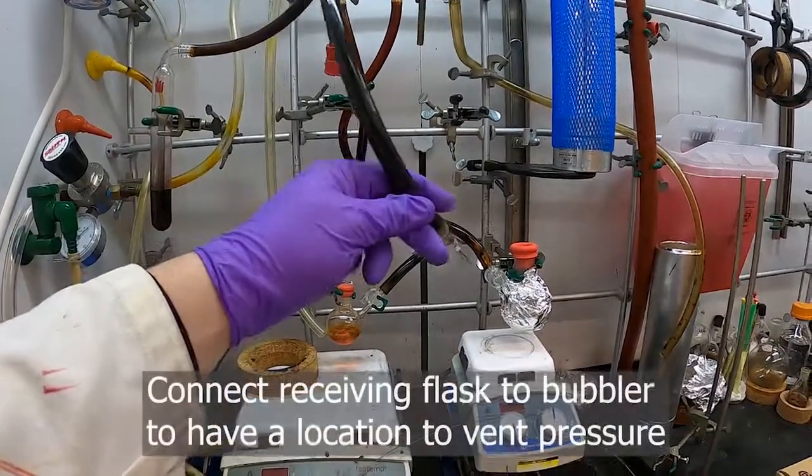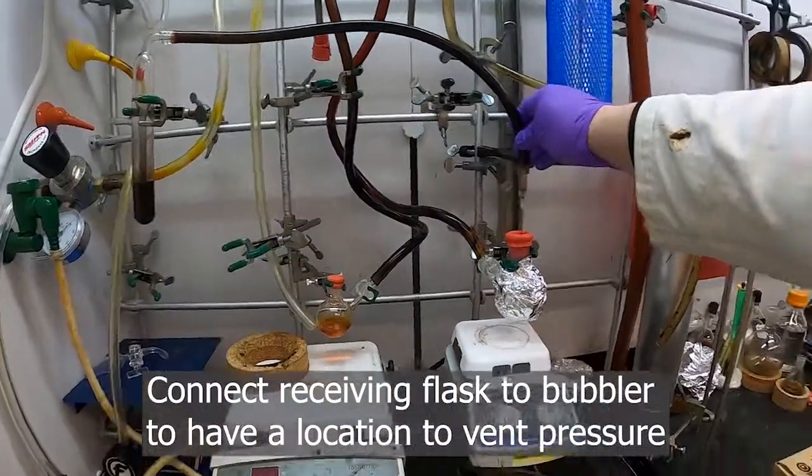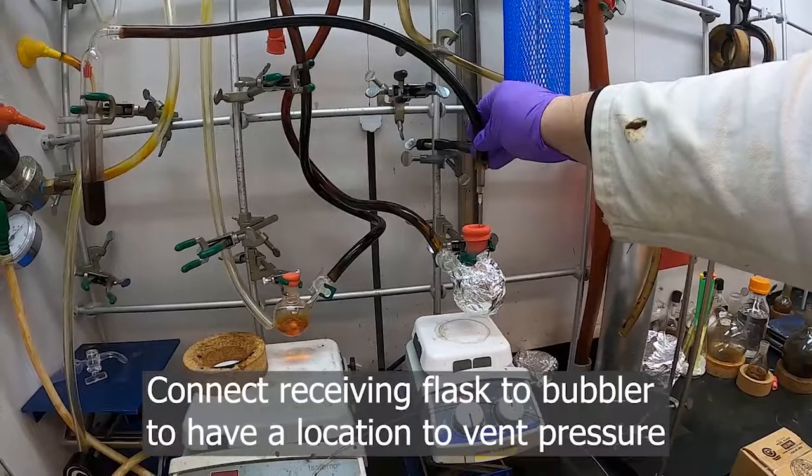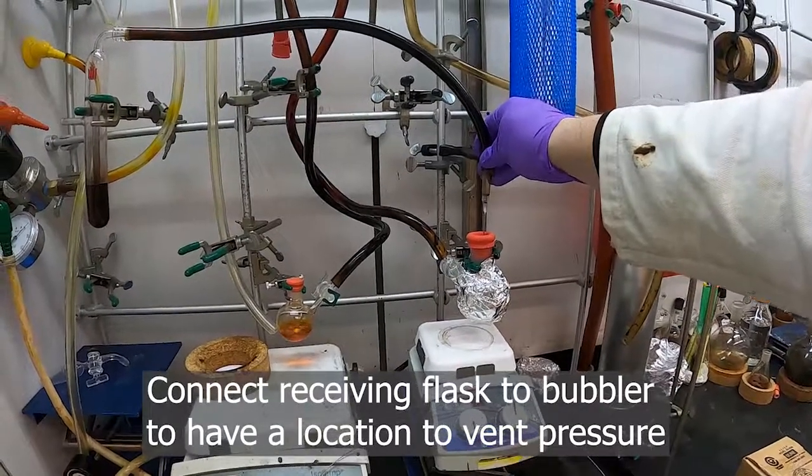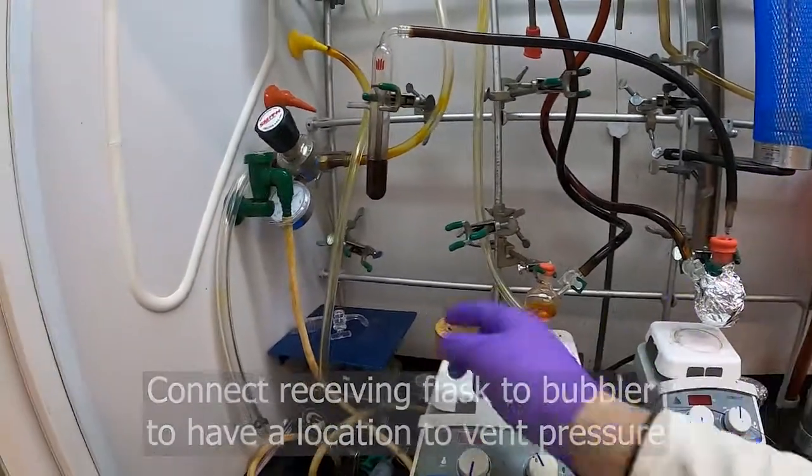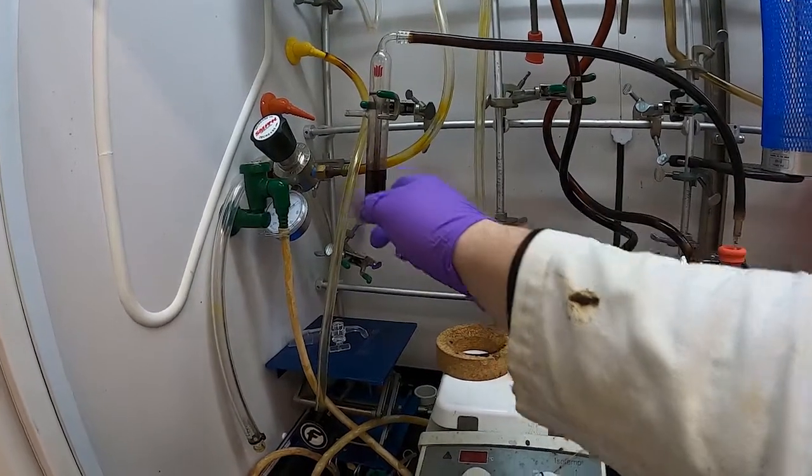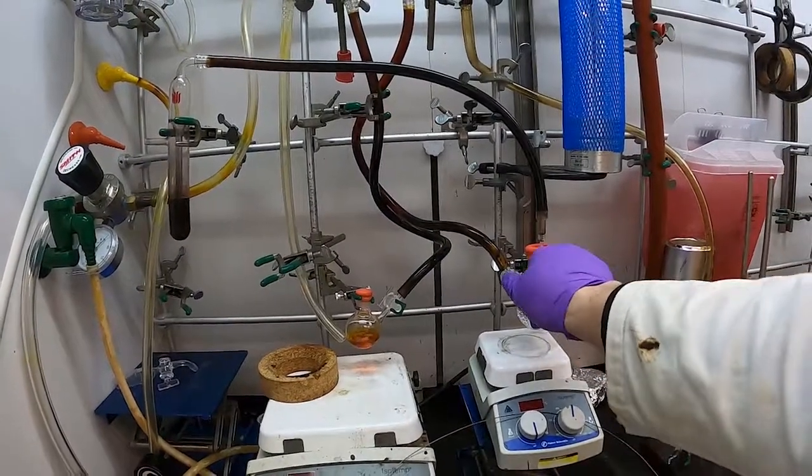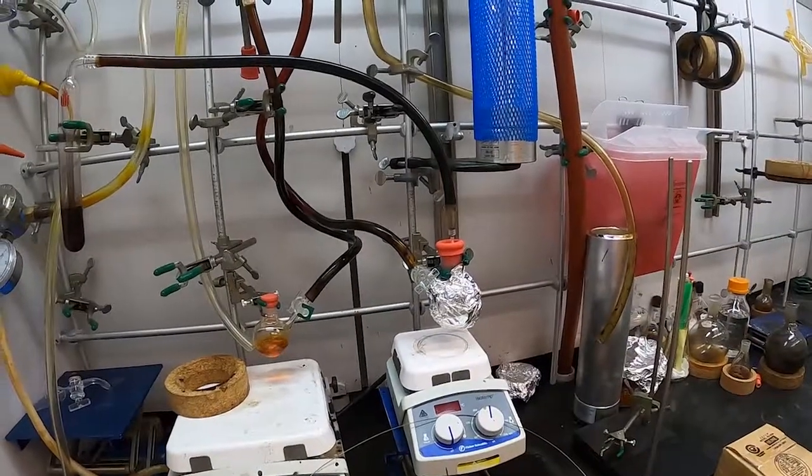The first thing I'm going to do is take my bubbler and put it into the flask that's going to receive my solution via cannula. That will relieve some of the pressure and cause a partial vacuum here.